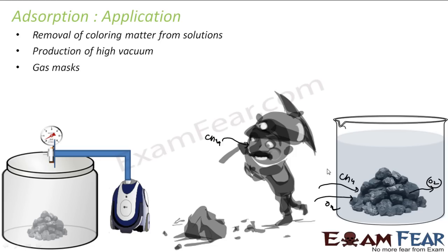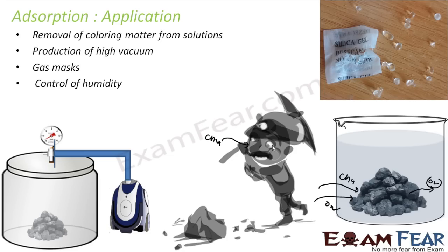Not only methane but other poisonous gases as well are handled this way in coal mines. Activated charcoal is nothing but finely divided charcoal, so that the surface area is more and it can adsorb more and more gas. This is what the coal mine workers use in their gas masks.